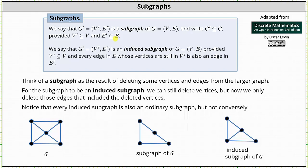Also notice we're using subset notation here, but when referring to the graphs, we say G prime is a subgraph of G. Next, we say that G prime is an induced subgraph of G, provided V prime is a subset of V, and every edge in E whose vertices are still in V prime is also an edge in E prime.